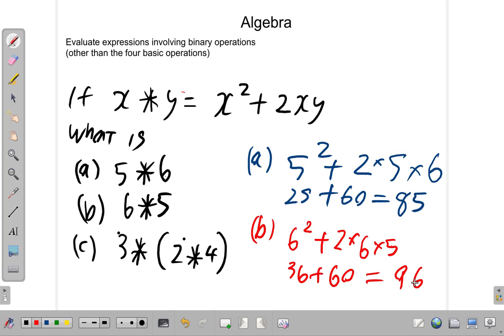So, you get a different answer. 5 star 6 and 6 star 5 yield different things.